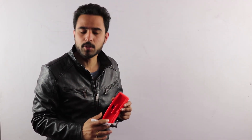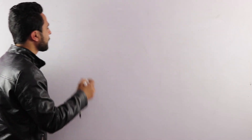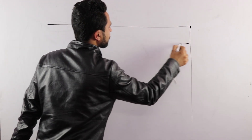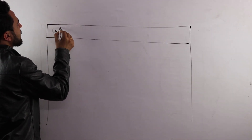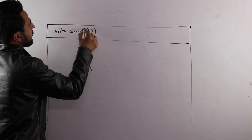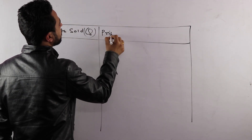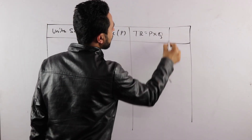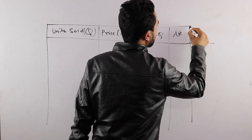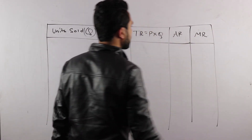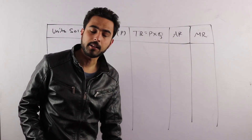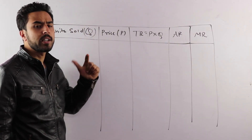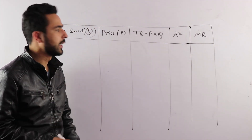Now let us look at the table. We will present the table with example data. The columns include quantity Q, price P, and total revenue TR, which is P multiplied by Q. We will use this table to derive the AR and MR curves.